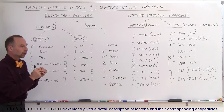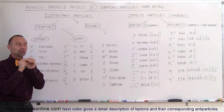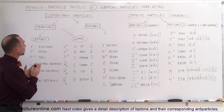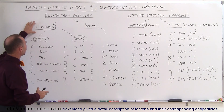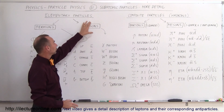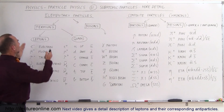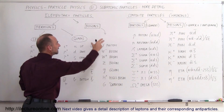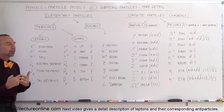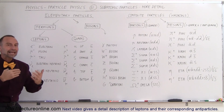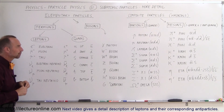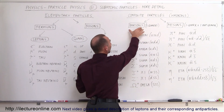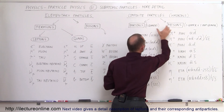The elementary particles are the point particles that don't seem to have any internal structure. Of those elementary particles there are two main categories: we have the fermions and we have the bosons. The fermions are subdivided into leptons and quarks, and the bosons are basically the interchange and intermediate particles — the particles that mediate the forces of the universe. The composite particles, called hadrons, are divided into two kinds: the baryons and the mesons.